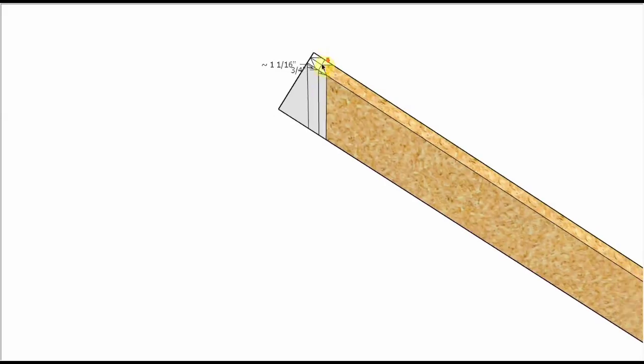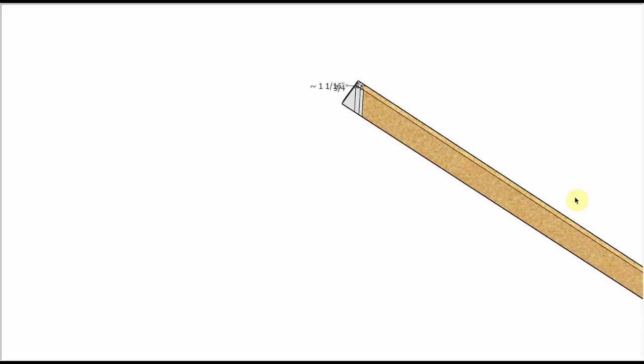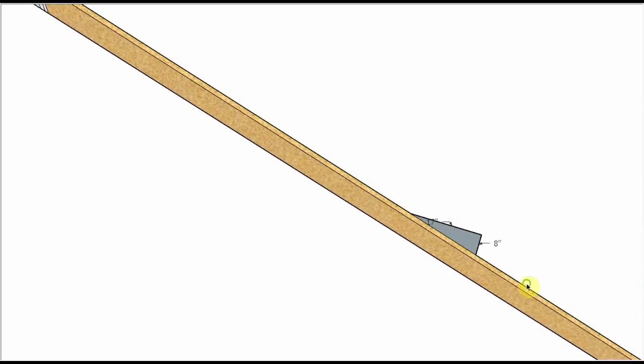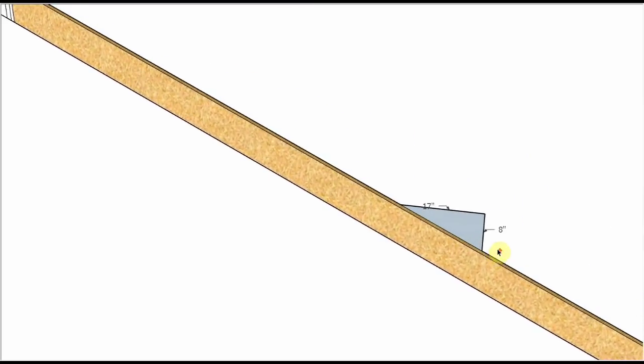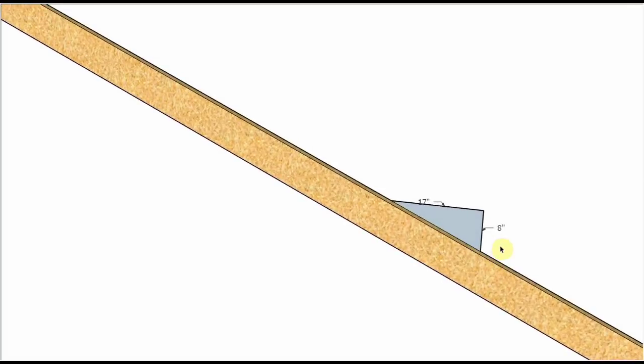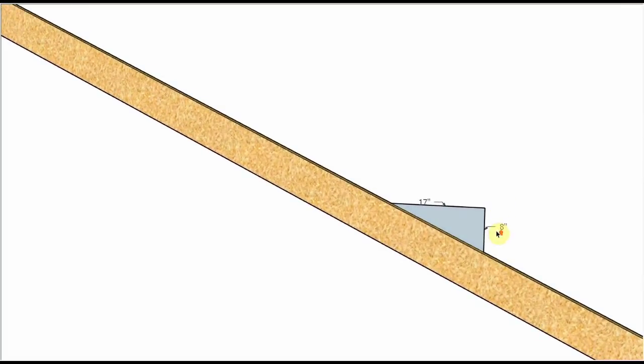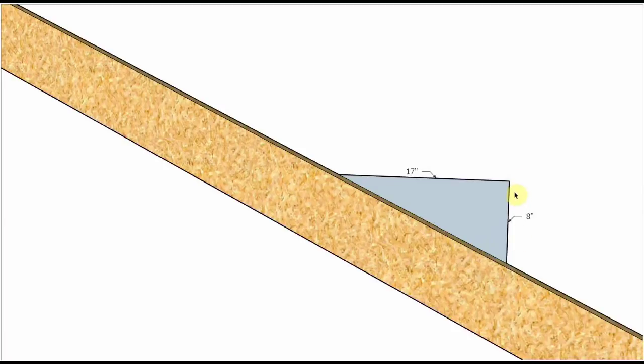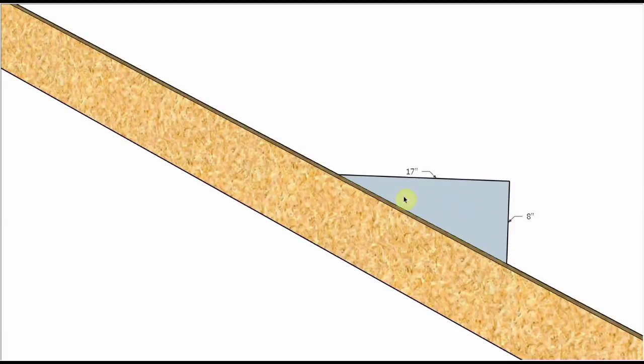Now when we set our framing square for a hip rafter, we use different numbers than when we set our framing square to lay out a common rafter. A common rafter you'd set your framing square using the numbers 8 and 12, the same as the slope of the roof. But a hip rafter has to travel further to reach that 8 inches, so we use the number 8 still on the tongue, but on the blade of the square we use 17. That gives us the proper angle that the hip rafter runs at.